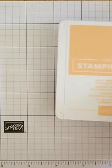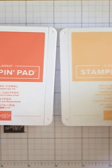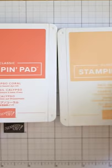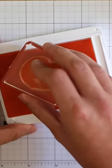For this technique, you're going to need a light color and a darker color. In this case, I'm using the current in color Pale Papaya and Calypso Coral. Using your lightest color first, bring in your solid-based image and ink it.